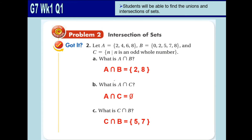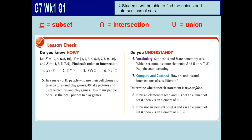Here are some symbols to remember: this symbol is for the subset, this is for the intersection, and this is for the union. I will be giving you 'try this' problems for you to try at home to see whether you have understood our lesson for today.